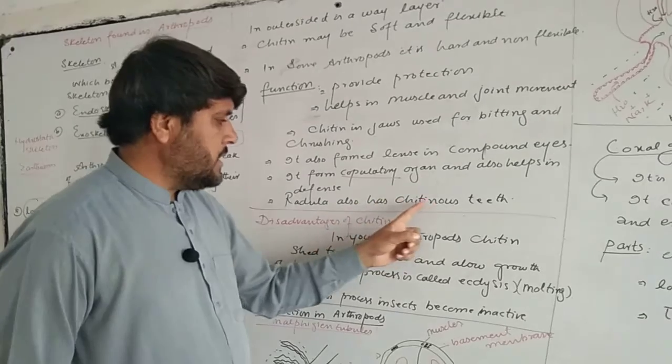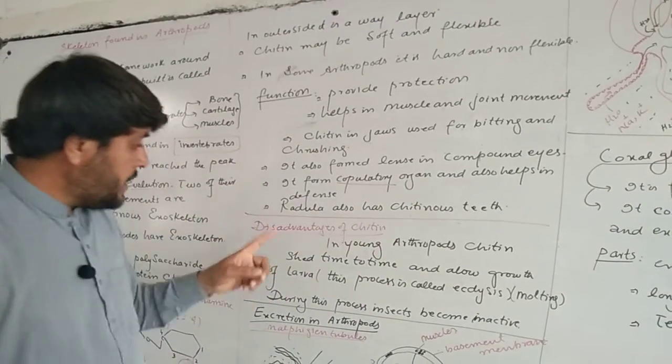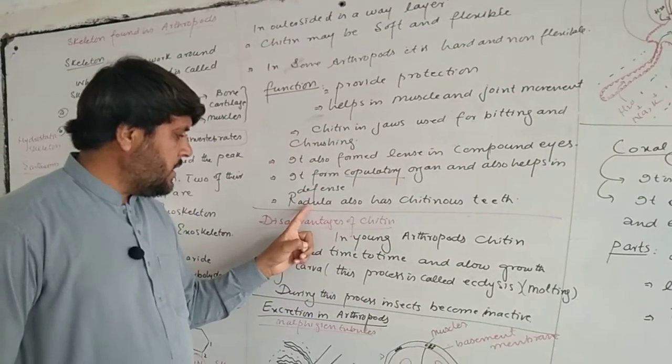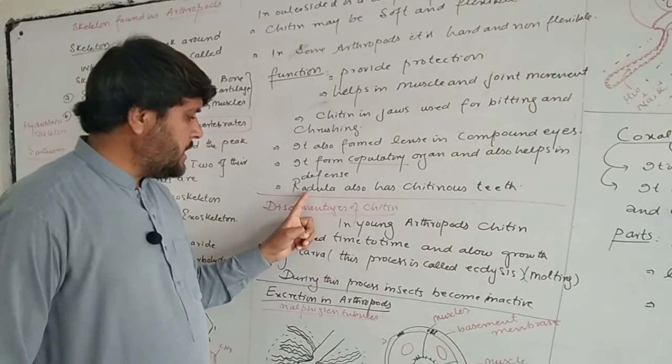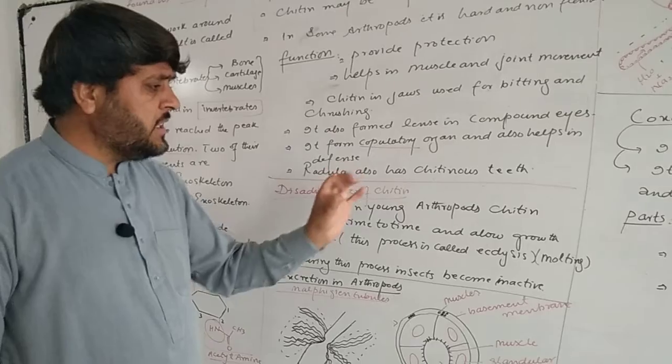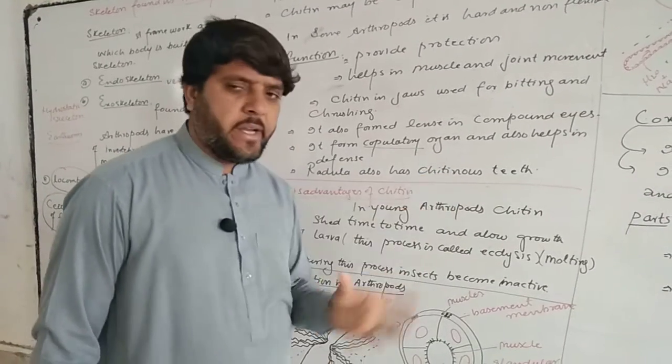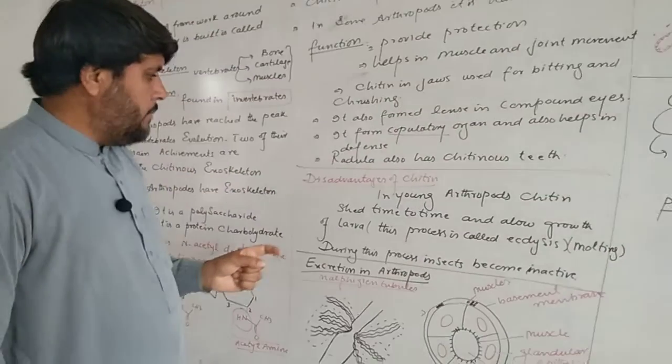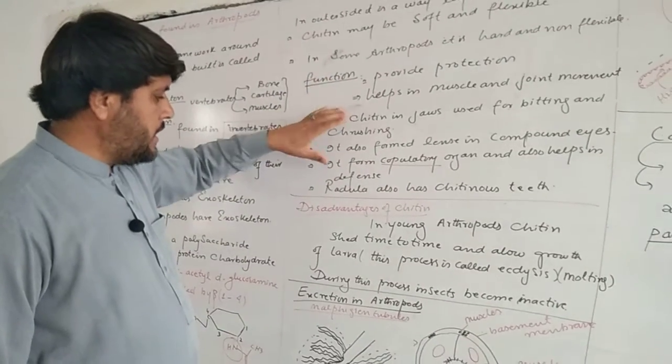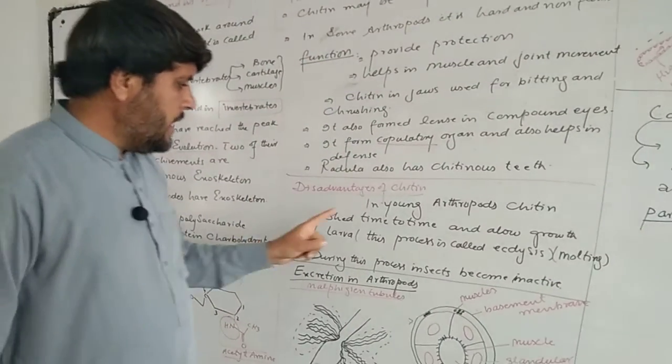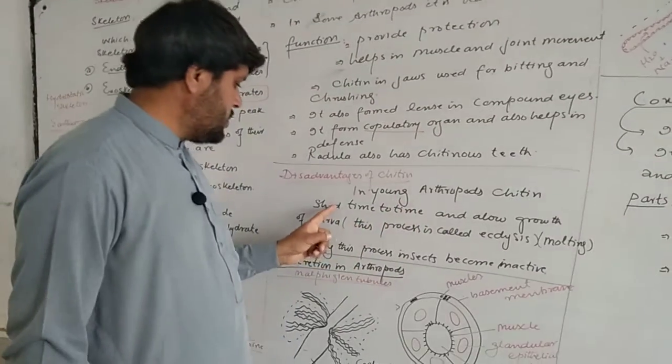Radula also has chitinous teeth. Point to be noted: the radula is a special structure found in phylum Mollusca. It's a tongue-like structure with teeth made of chitin.